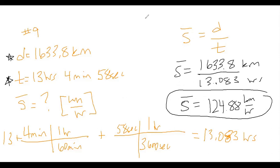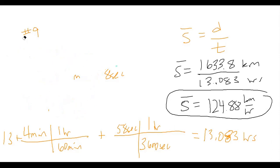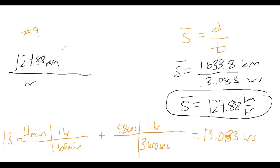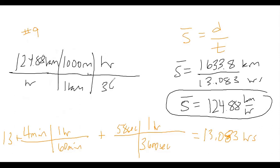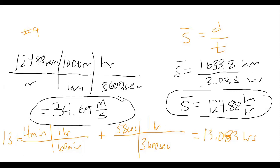For part B of number nine, we want to convert 124.88 kilometers per hour into meters per second. Using factor labels: multiply by 1,000 meters per kilometer and divide by 3,600 seconds per hour. That gives us 34.69 meters per second. So we found the average speed both in kilometers per hour and in meters per second.